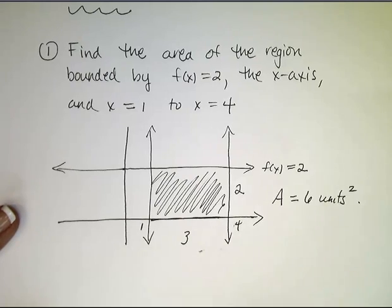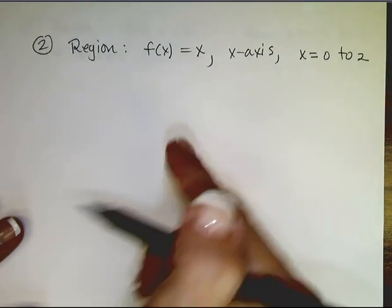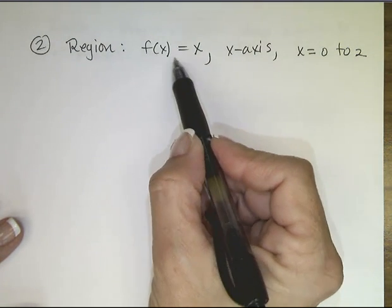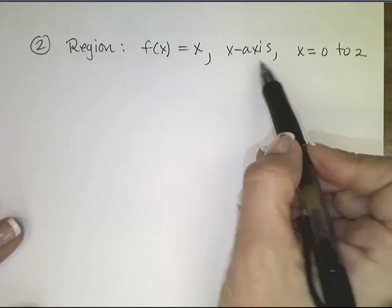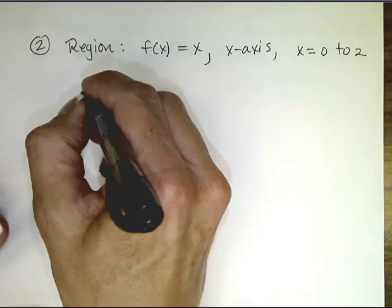Okay, that's super easy. Why would I even ask you to do that? Well, let's look at this next example. Let's find the region that's bounded by the line f(x) equals x, the x-axis, and x equals 0 to 2. So again, let's draw this picture.